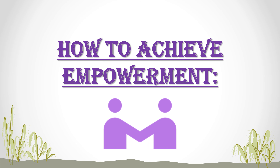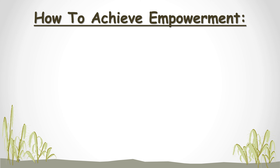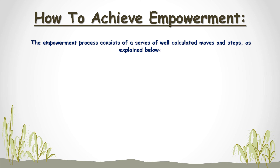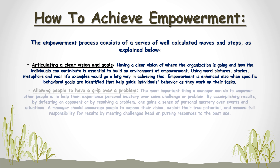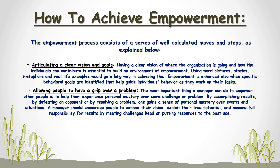How to achieve empowerment: The process consists of well-calculated steps. First, articulate a clear vision and goals — having a clear vision of where the organization is going and how individuals can contribute is essential. Using word pictures, stories, metaphors, and real-life examples helps, as does identifying specific behavioral goals to guide individuals. Second, allow people to have a grip over a problem — the most important thing a manager can do is help employees experience personal mastery over some challenge. By accomplishing results, defeating challenges, or resolving problems, one gains a sense of personal mastery. Managers should encourage people to expand their vision, exploit their true potential, and assume full responsibility by meeting challenges head-on.